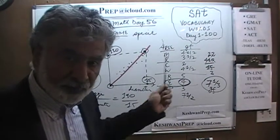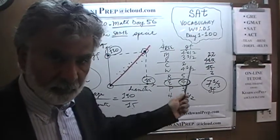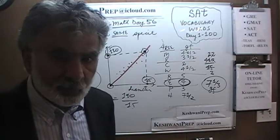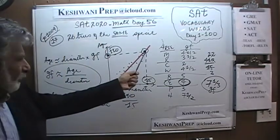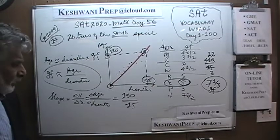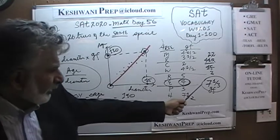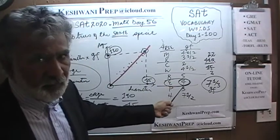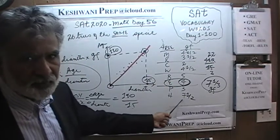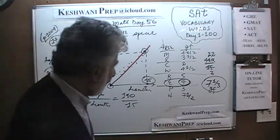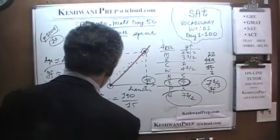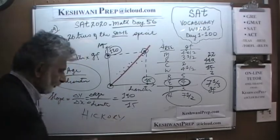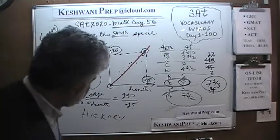Of course, I know it takes a lot of time because I am explaining everything, but if you can do this yourself it shouldn't take long. Just pick the origin, pick one point at the end, and be done with it. The growth factor comes out to be 7 and one third. Of all the answer choices, there is only one tree with a growth factor of 7.5, which is hickory. So the answer is hickory — answer choice D.